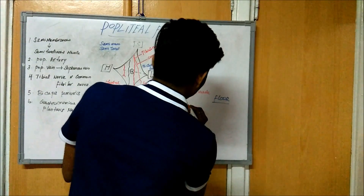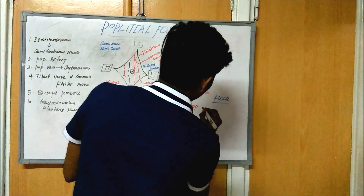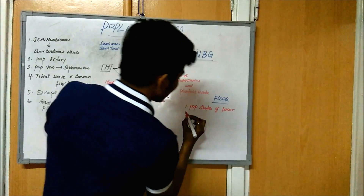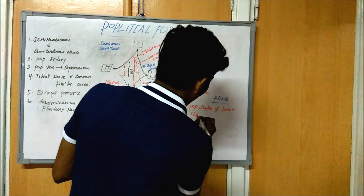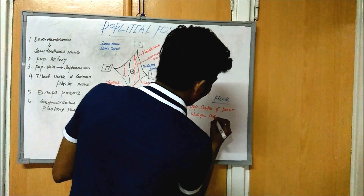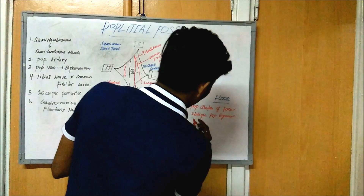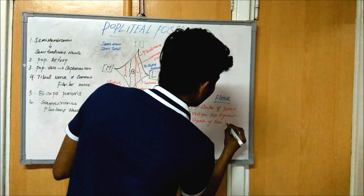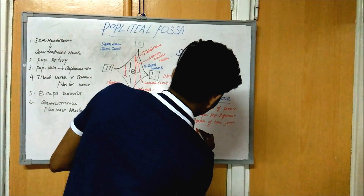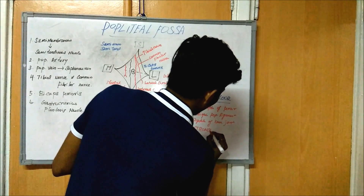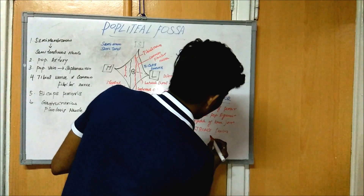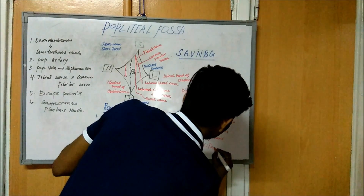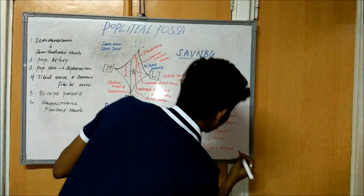For the floor, the first structure is the popliteal surface of the femur; the second is the oblique popliteal ligament and the capsule of the knee joint; and the third is the deep fascia, which covers the popliteal muscle.